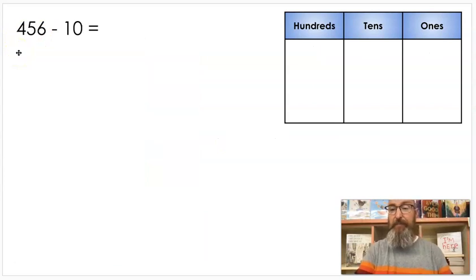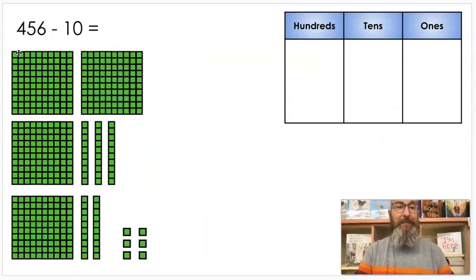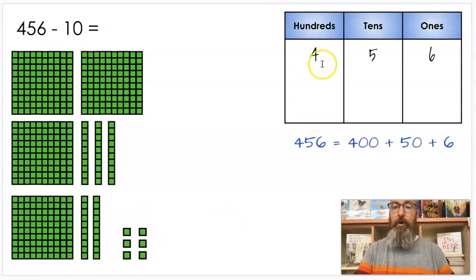Let's do a ten. 456 minus 10. I have my place value blocks: 400, I have 5 tens which is 50, 6 ones is 6. Same thing: 400, 5 tens is 50, 6 ones is 6. You can see that makes sense.